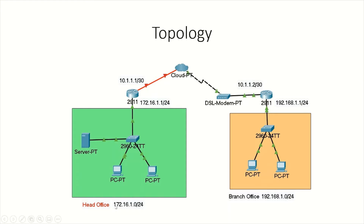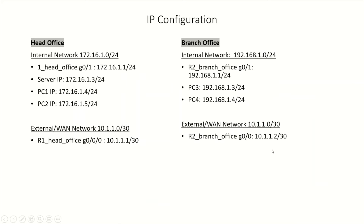This is the network for the head office and that is the network for the branch office. This router is connected to the cloud through a fiber optic cable, and this router connects through a DSL modem to the cloud. Once we are done with the configuration, we will be able to ping from one of the head office PCs to the branch office PC. Here is the IP configuration — the internal network and all IPs assigned to the head office, and the internal network of the branch office with all PCs, router gateways, and the WAN link.